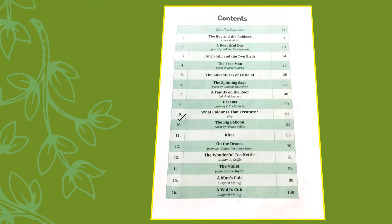Yes, we move on to the Contents page. So, open your book to the Contents page. And we are going to do Chapter 9 as I told earlier. The name of the chapter is 'What Color Is That Creature?' It is a Play and the Chapter is on Page No. 53. So, I would want you to turn to Page No. 53 so that you can read aloud the Chapter along with me.